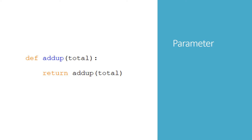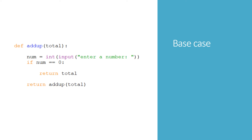The next thing we need to add to make this a recursive function is the base case. We've said that the function will stop repeating when the user enters the number zero. So we're giving the user a chance to enter a number, converting it to integer, and if it is zero, then we've hit the base case. For the base case, we have the word return followed by a value — the total — rather than recursively calling itself again.